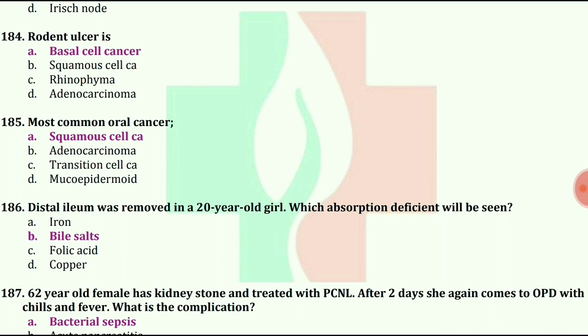Distal ileum was removed in a 20-year-old girl. Which absorption deficiency will be seen? The answer is bile salts.